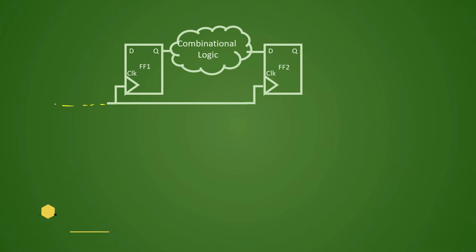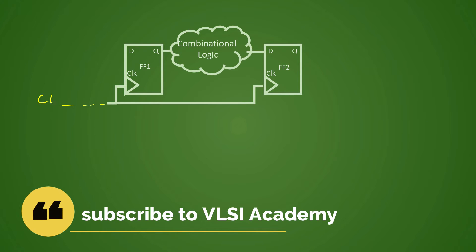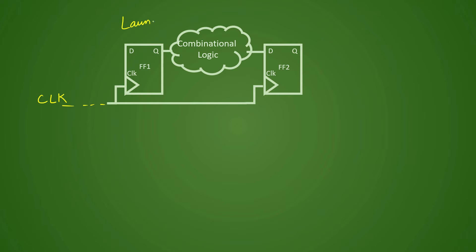Taking this example, this is our clock source and this is our launch flop. The data will be launched from this side and it will be captured at the capture flop. That is why it is called the capture flop — because data is getting captured at the capture flop. This is our typical timing path.